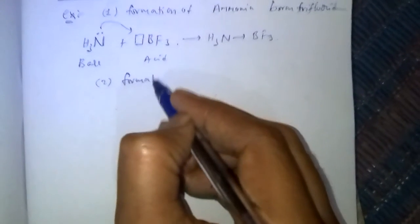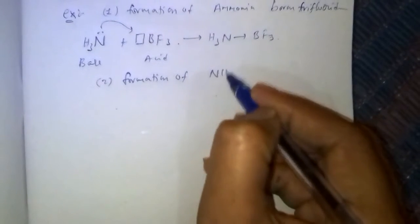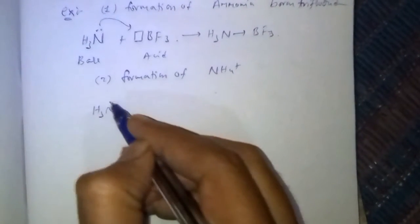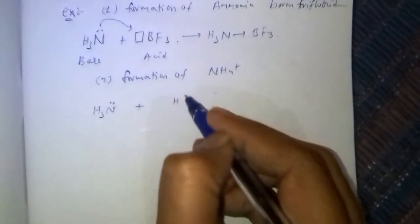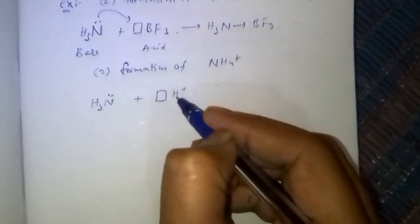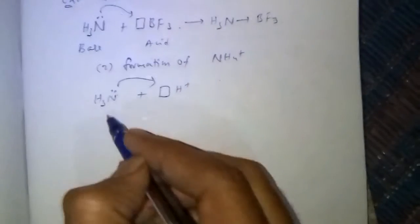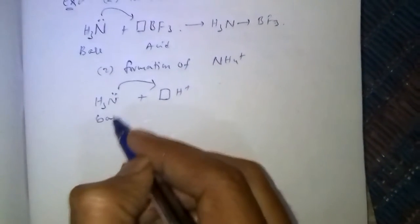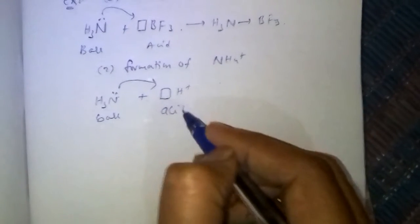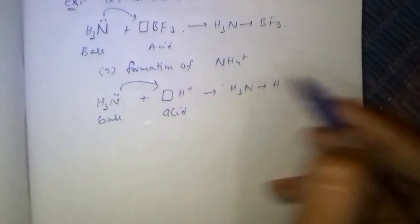Second example — formation of ammonium ion: NH3 donates its lone pair to H⁺. Hydrogen contains a vacant 1s orbital. NH3 donates the lone pair and acts as the base; H⁺ acts as the acid. A coordinate bond is formed between ammonia and the proton.